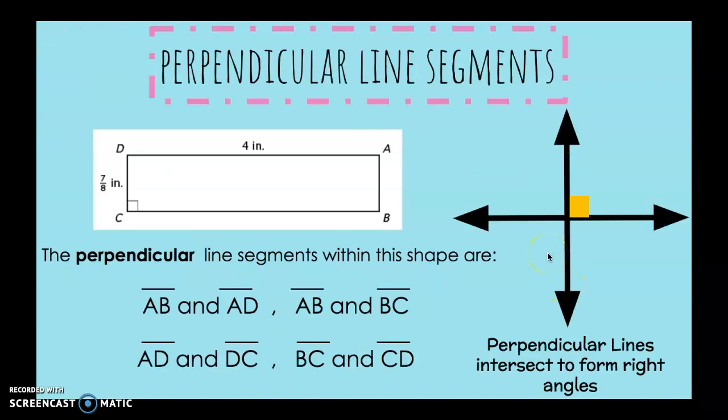Perpendicular line segments. Perpendicular lines intersect to form right angles. The perpendicular line segments within this shape are AB and AD, AB and BC, AD and DC, and BC and CD.